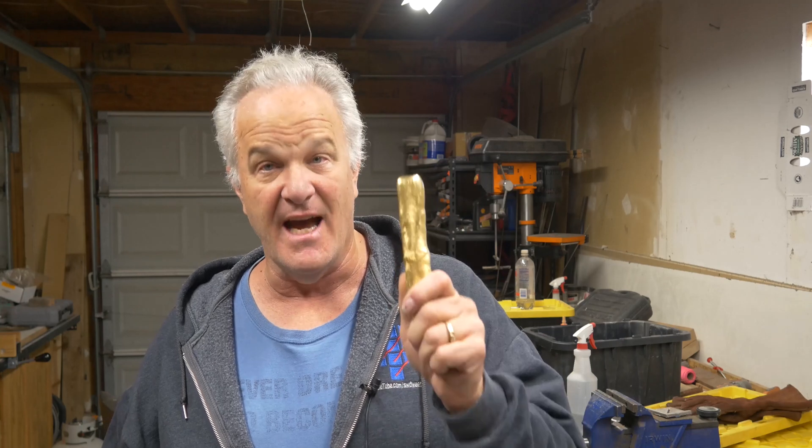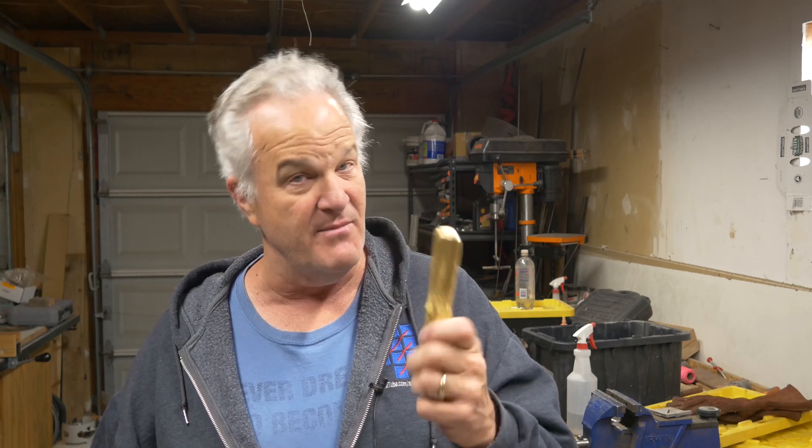Now, all alloys shrink, right? Anything we're going to cast here in the garage especially is going to shrink. Whether it be some aluminum alloy or something like this, this is aluminum bronze. This is the worst. This stuff shrinks. Talk about a frightened turtle. This stuff shrinks like mad. If you're going to cast aluminum bronze, you're going to end up needing feeders. I can almost guarantee it.